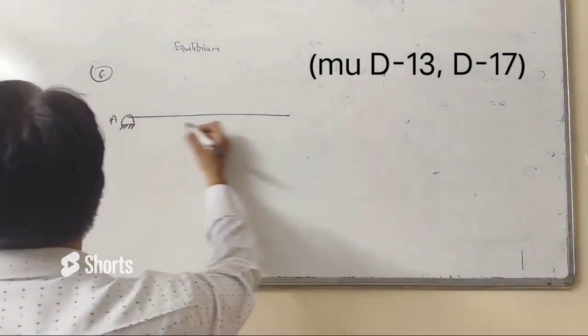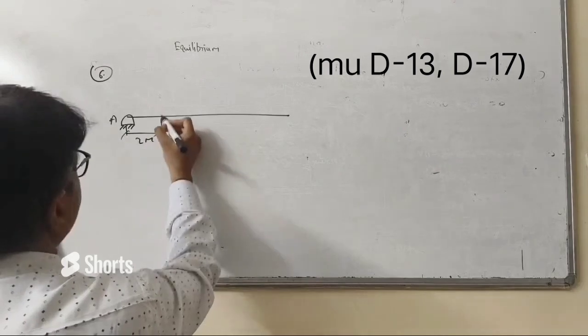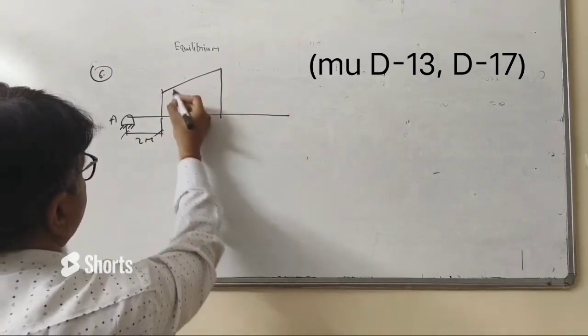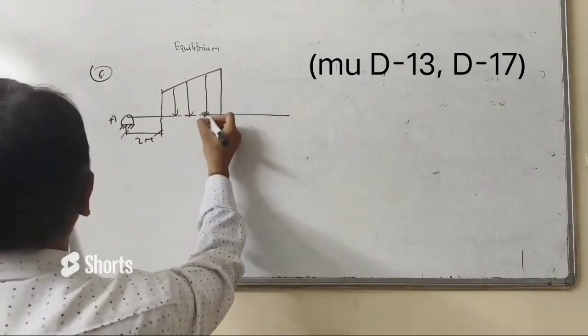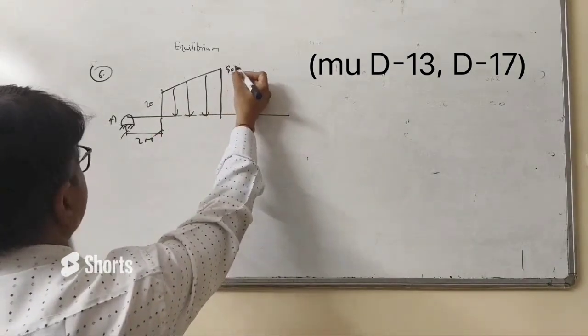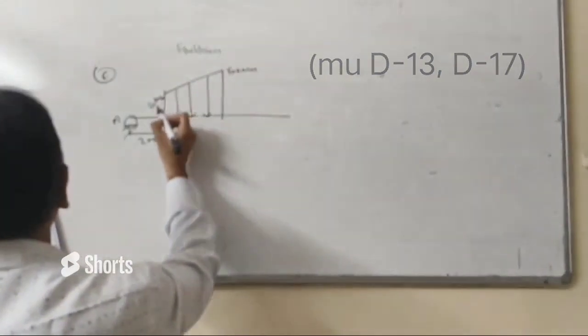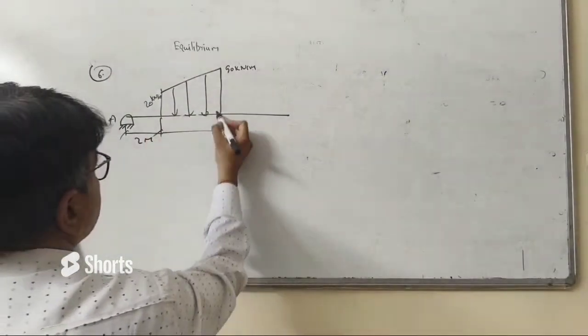This is a 2 meter distance from a propellable group and this is 50 kN per meter and this is 50 kN per meter.